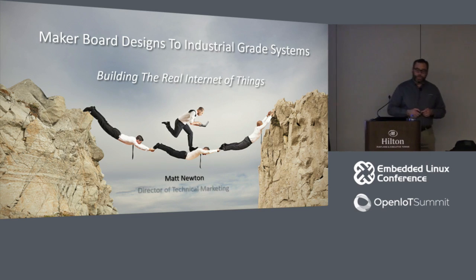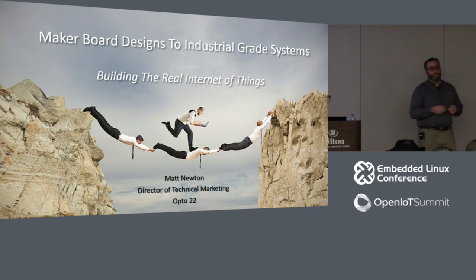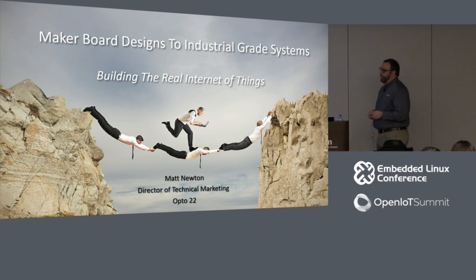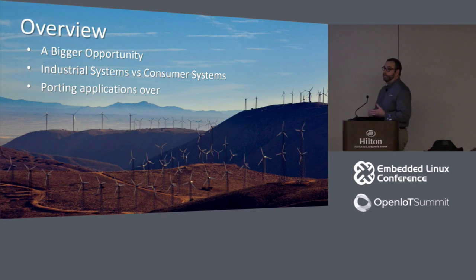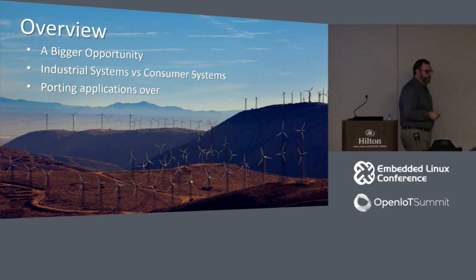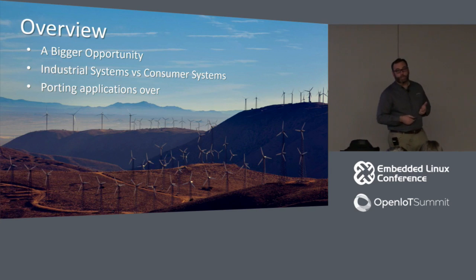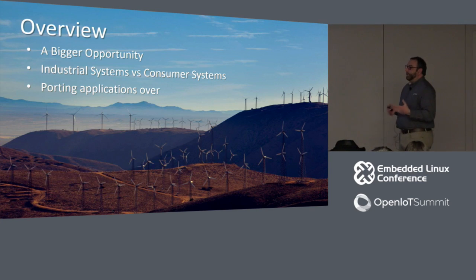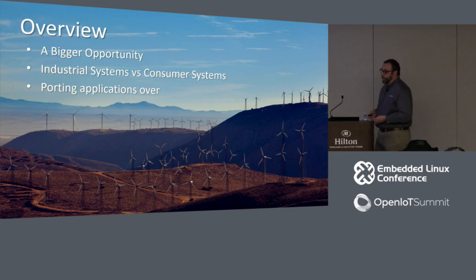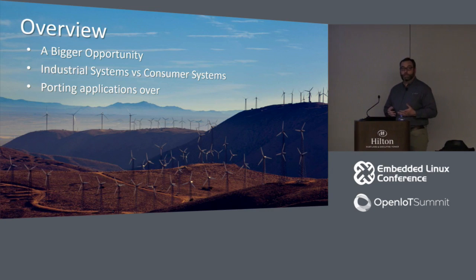My name is Matt Newton. I'm the director of technical marketing for an industrial automation company named Opto22. We have a booth here at the show — we're the ones with the big white wind turbine spinning around. Three key ideas we're going to cover today: there's a much larger opportunity out there we can all start tapping into; we'll talk about the differences between industrial systems and consumer systems from design, technology, and application perspectives; and then we'll get into the nitty-gritty on what the developer community needs to start porting this technology over.